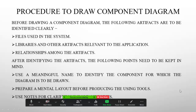The procedure to draw a component diagram: first, identify the files that you are using in the system. Second, identify the libraries and other artifacts relevant to the application. Artifacts means human-made items — what the software developer used while designing the project — those are known as artifacts.